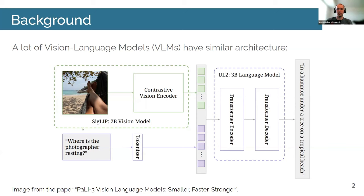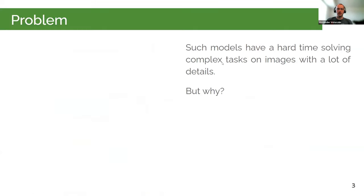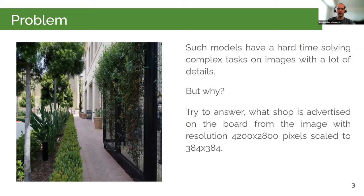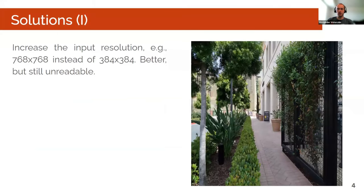You get an image, a question, and an answer. The problem I saw is that these models have a hard time solving complex tasks with a lot of details in images. For example, try to answer what kind of shop is advertised on a board given an image that was originally 4200 by 2800 pixels — but for the neural network we must shove it into a very low resolution 300 by 384 representation. It's physically impossible to answer, and any prediction will be a random guess.